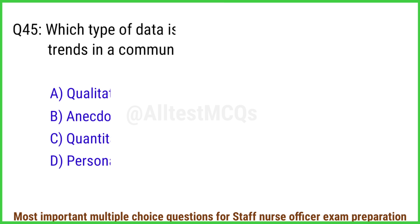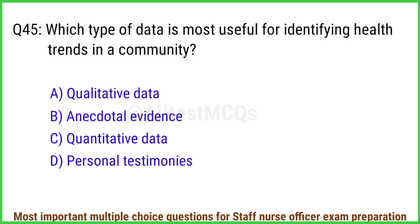Q45. Which type of data is most useful for identifying health trends in a community? The right answer is option C: Quantitative data.